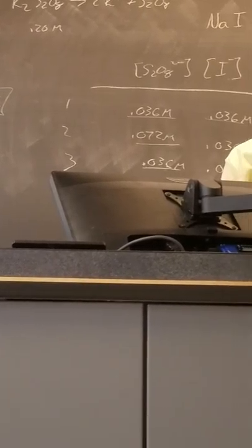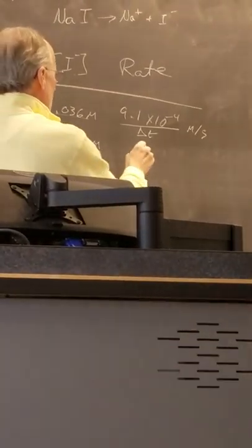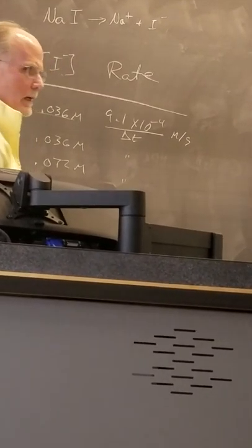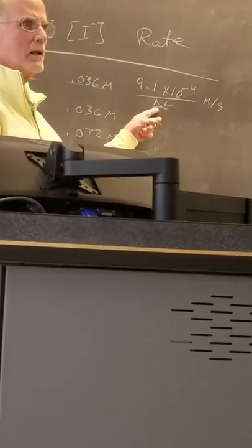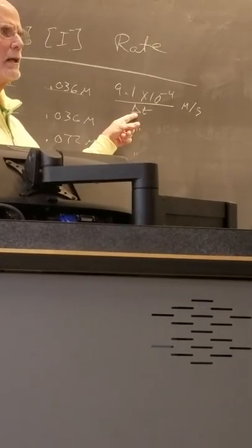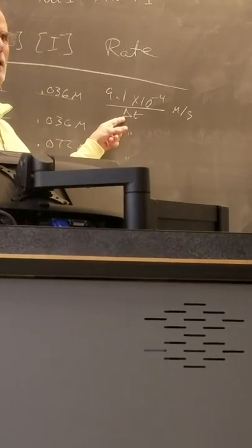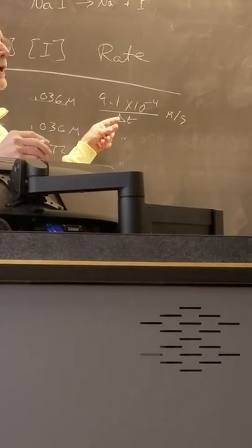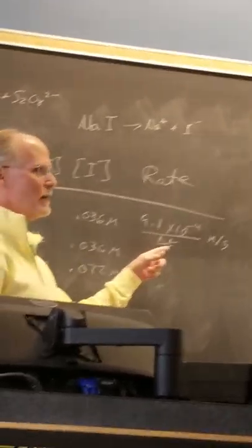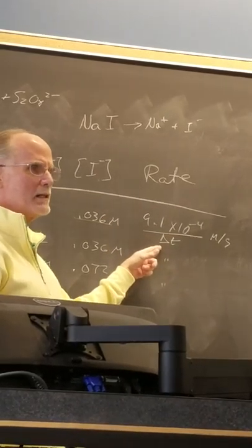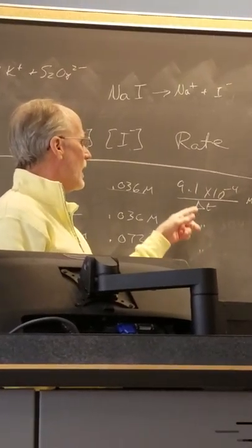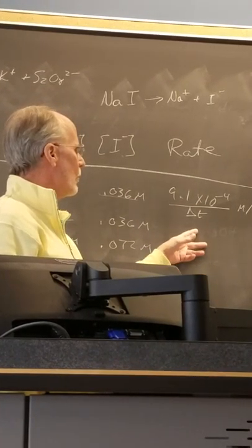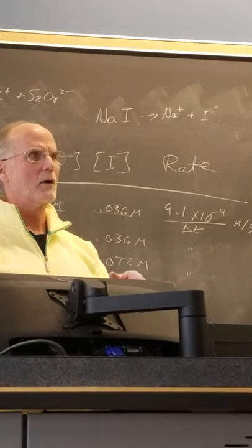And that's going to be moles per liter per second. So it's the same thing for each of these, except you're going to have a different delta T. This is your time lapse in seconds for each of your three first reactions. So typically, something like 60 seconds here, 120 seconds here, 60 seconds here. So that will mean the rate for these two will be about double what this one is.